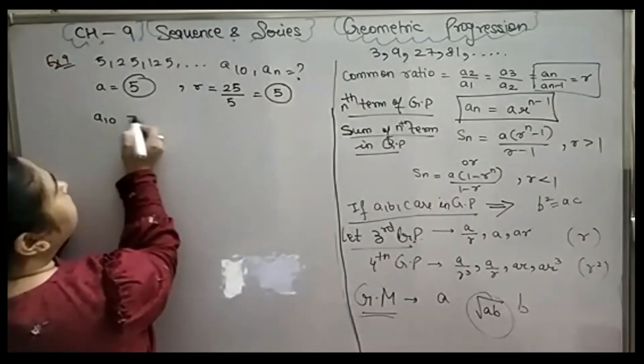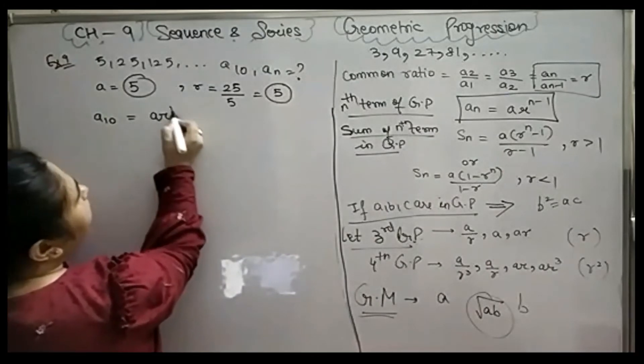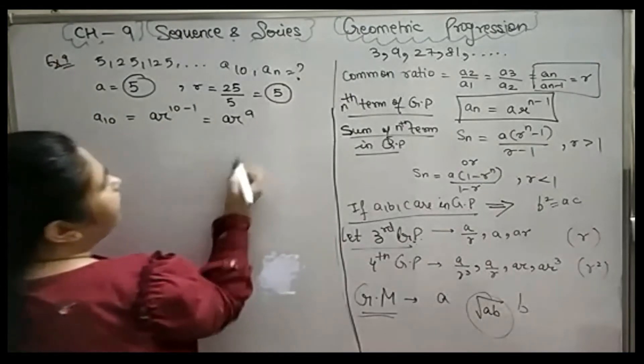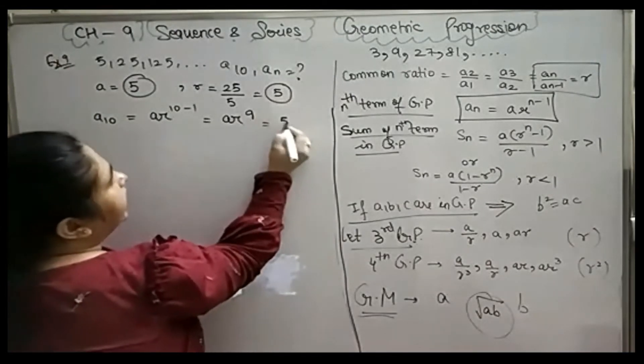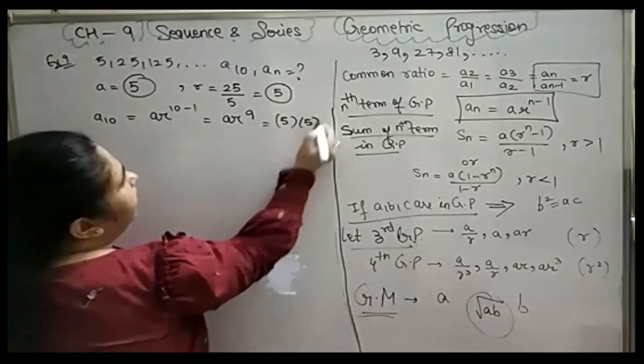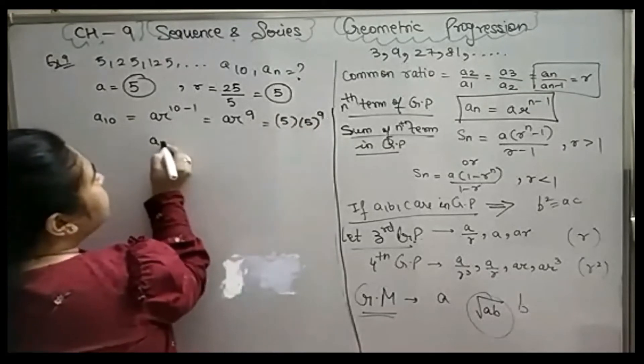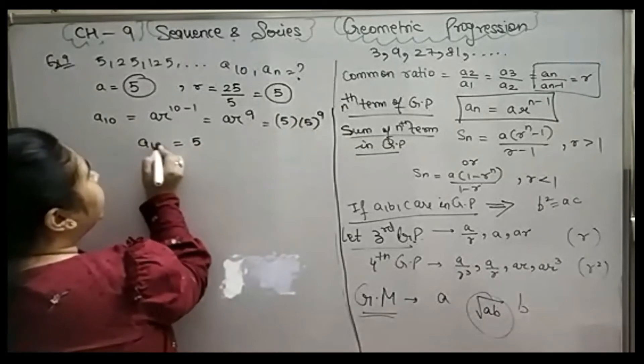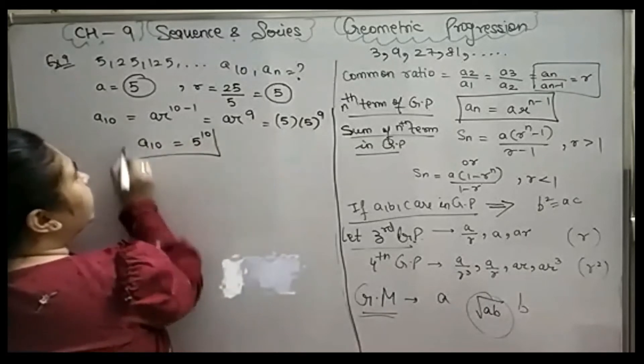I am going to find the 10th term. What is the formula of the 10th term? A10 = A × R^(10-1) = A × R^9. A is 5, R is 5. When bases are equal, power must be added. So, what is the 10th term? This GP's 10th term is 5^10.